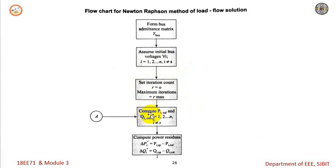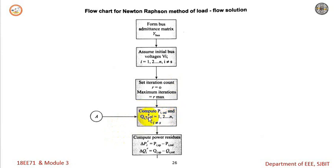The first step inside the iteration is to compute P_i calculated and Q_i calculated for any buses — whether it may be a PV bus or a PQ bus. We need to compute P_i calculated and Q_i calculated for all the buses.